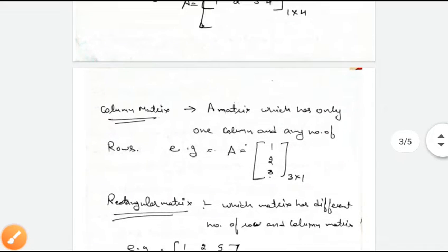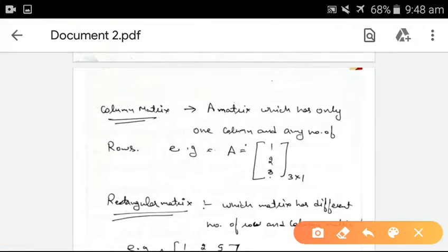Further, column matrix — it is the opposite of the row matrix. Here, the number of columns is 1 and the number of rows can be any number. Here, the number of rows is 3 and the number of columns is 1.